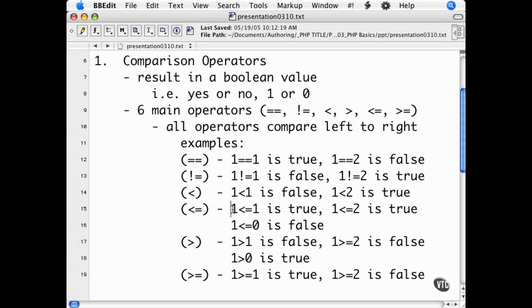Used independently, the results of these operations will not return anything to the browser. The results are simply true or false. However, when used within a conditional structure such as an if, they are used to determine what condition may be executed.